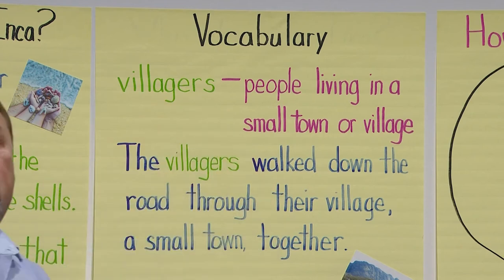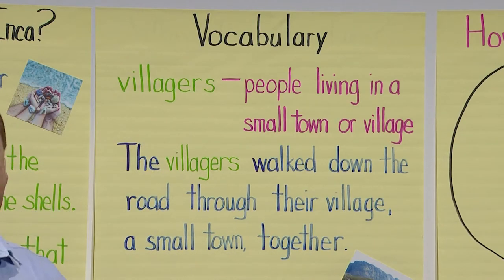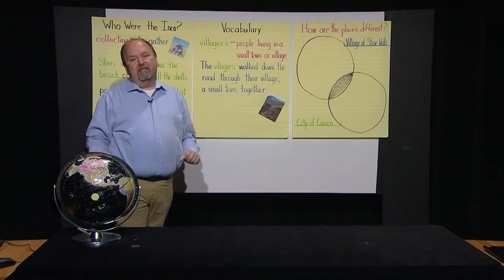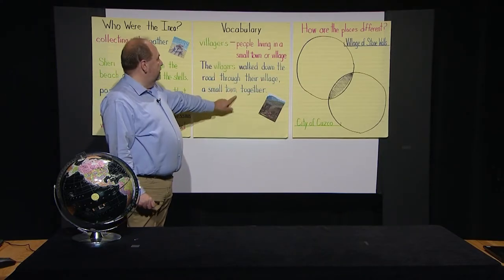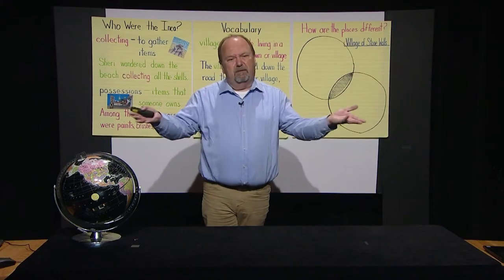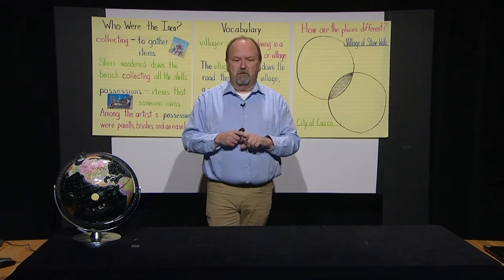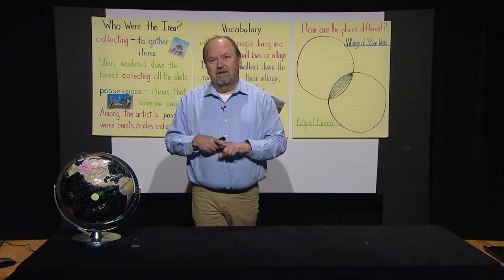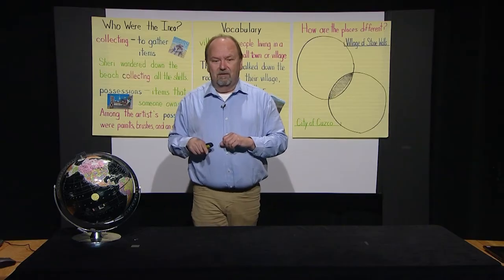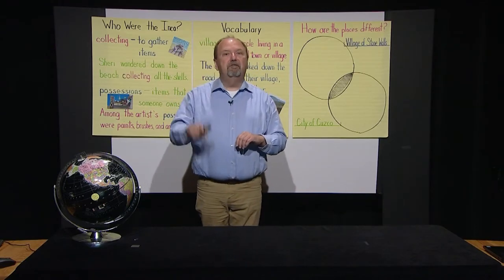Our last word to look at today is villagers. Villagers is a noun — we use this word to represent people. Villagers are people living in a small town or village. They are the people in our village. For example, the villagers walk down the road through their village together. Remember, a village is a small town. Can you pretend that you are talking to a group of people that live in the same place? Point your hands to your body and then stretch them out from you. Yes, the people living together are villagers. You and all the people that live in your small town are villagers of that town.